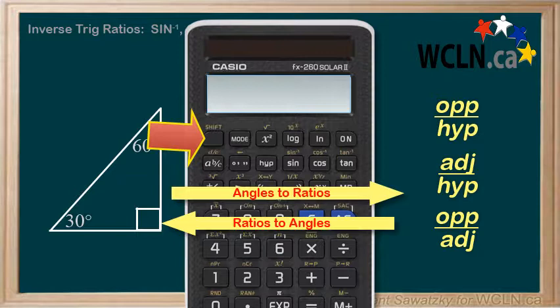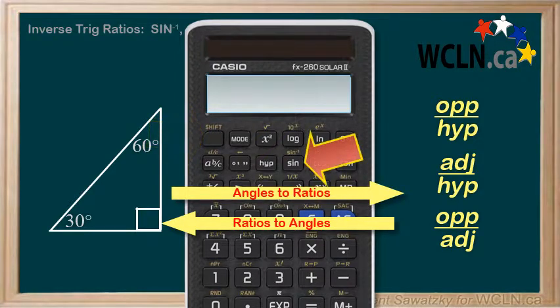To get inverse sine, sometimes called arc sine, we would hit Shift and then the sine button. And same with the cos and tan. We would hit Shift and then the button to get to the inverse function.